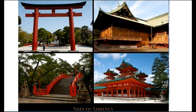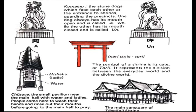Examples of Shinto structures include the Shinto shrines, the Torii gate, the Shinto temple, and the Shinto bridge — also called the rainbow bridge. Komainu are the stone dogs which face each other at the entrance of the shrine. The Torii is the symbol of the shrine — its gate. The Chozuya is a small pavilion near the main hall with water and ladles where people come to wash their hands.